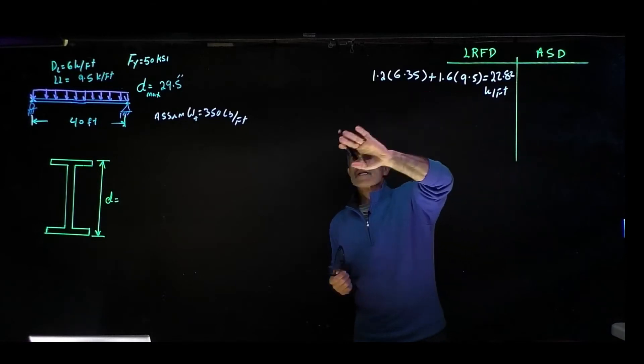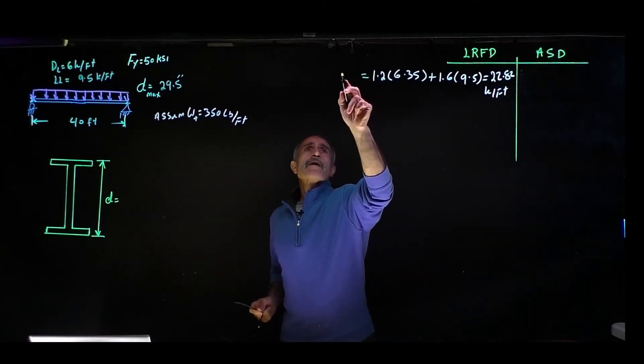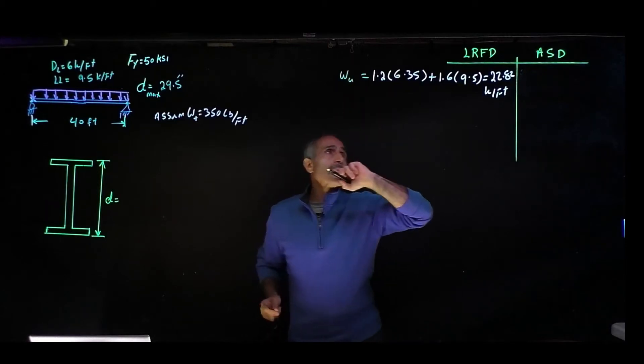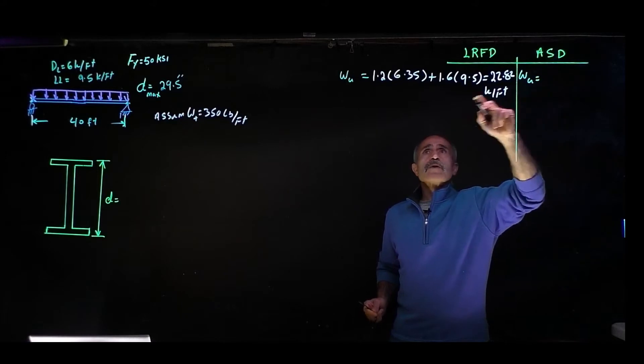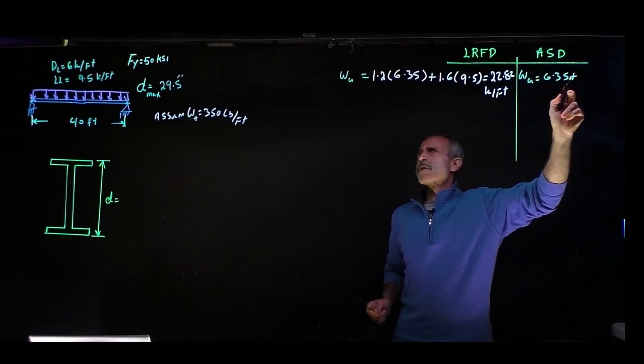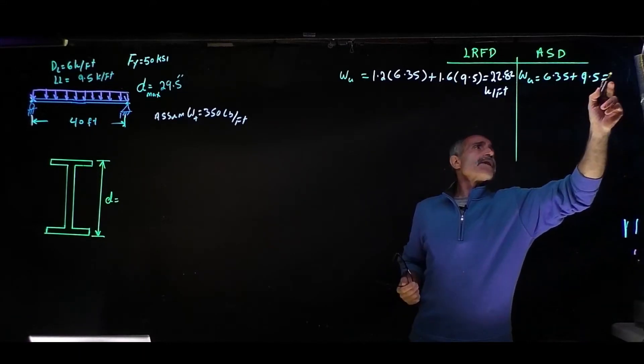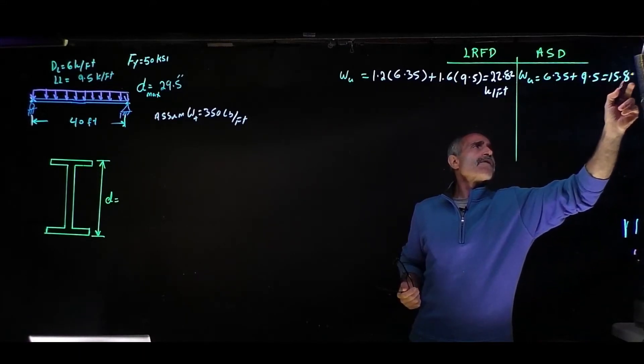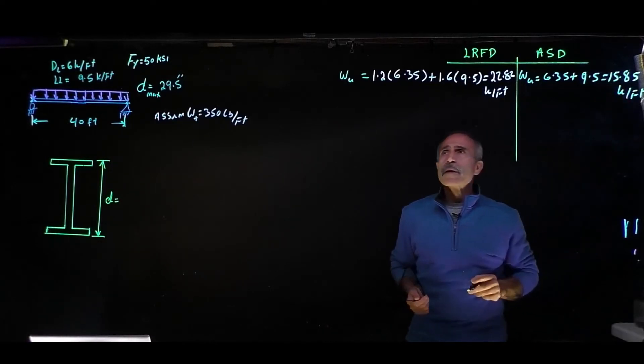In ASD, we're just going to add both of them. WU in LRFD, and ASD will be WA, which is 6.35 dead load plus live load of 9.5, equals 15.85 kip per foot.